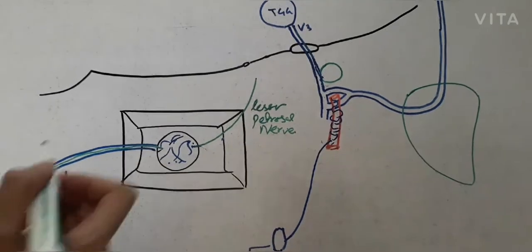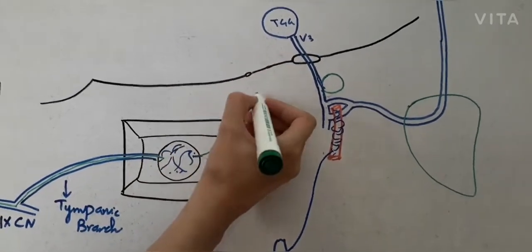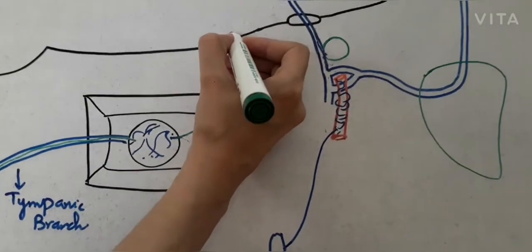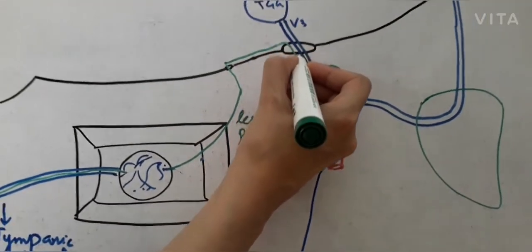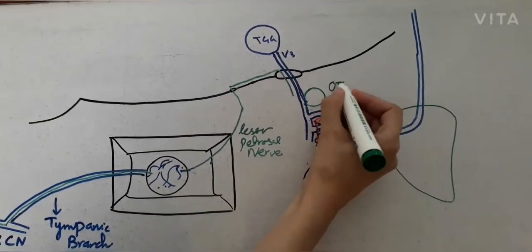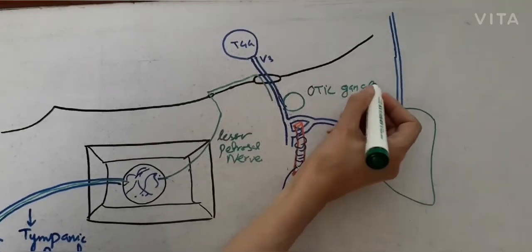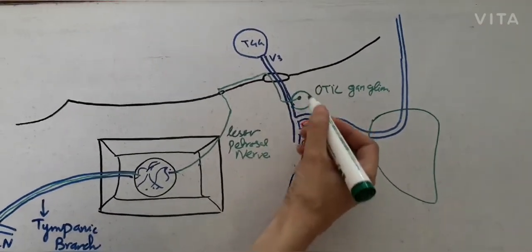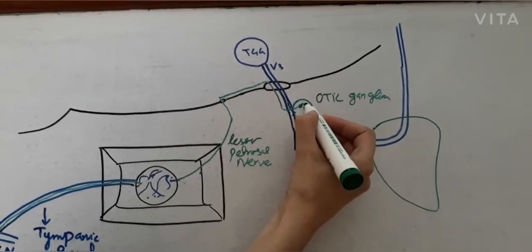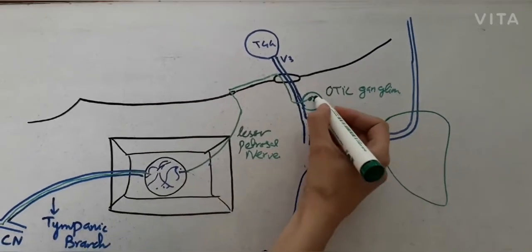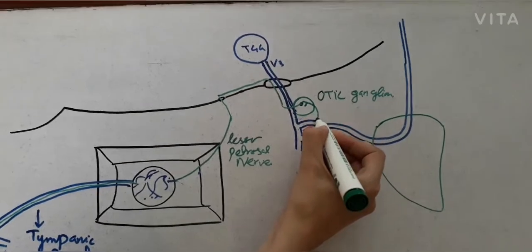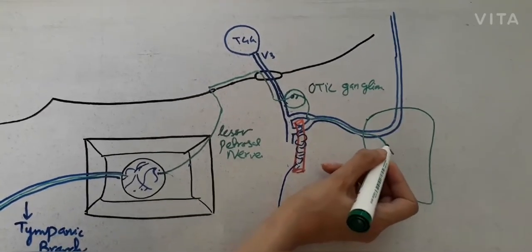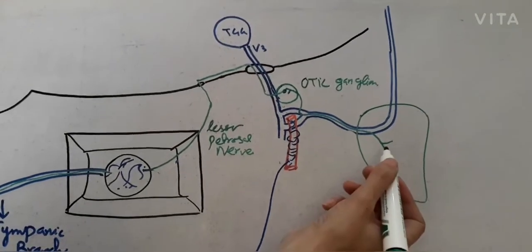The lesser petrosal nerve emerges in the petrous part of the temporal bone. It runs along the hiatus and groove on the inferior sloping surface of the petrous temporal bone, then leaves through the foramen ovale. It ultimately reaches the otic ganglion, medial to the mandibular nerve. Here, the parasympathetic fibres relay. Postganglionic fibres arise and join the auriculotemporal nerve through a communicating branch, then travel along the auriculotemporal nerve to reach the parotid gland. This is how parasympathetic fibres reach the parotid gland.